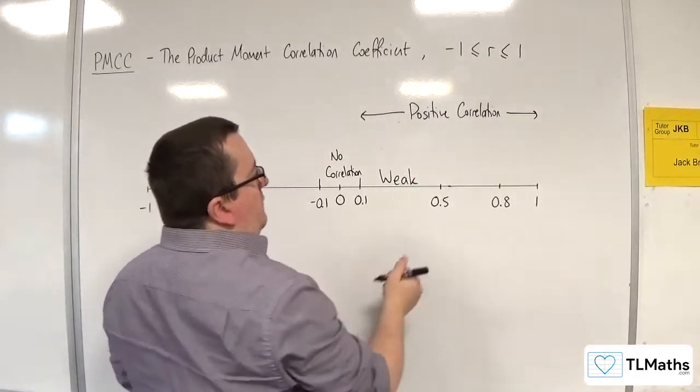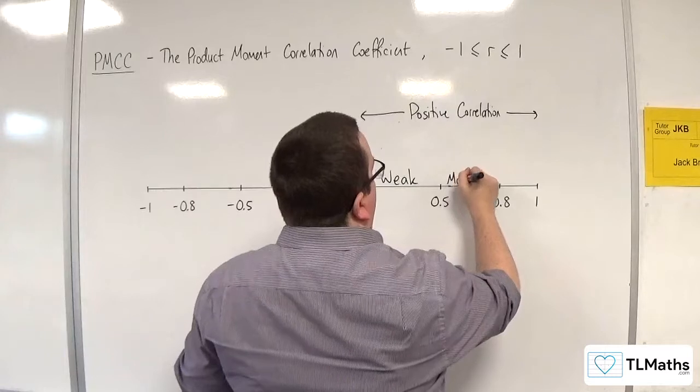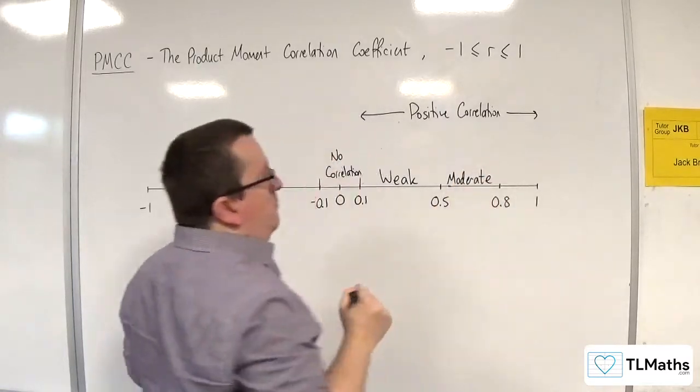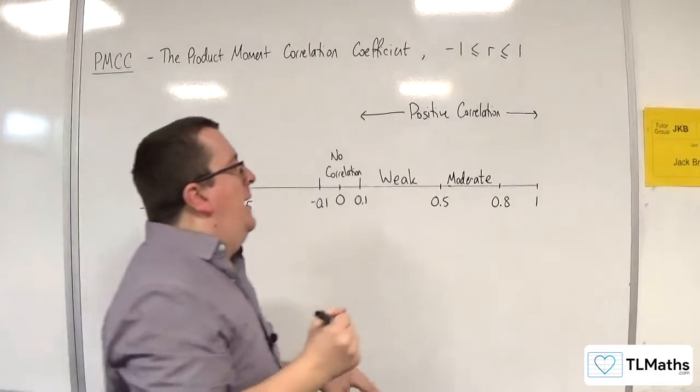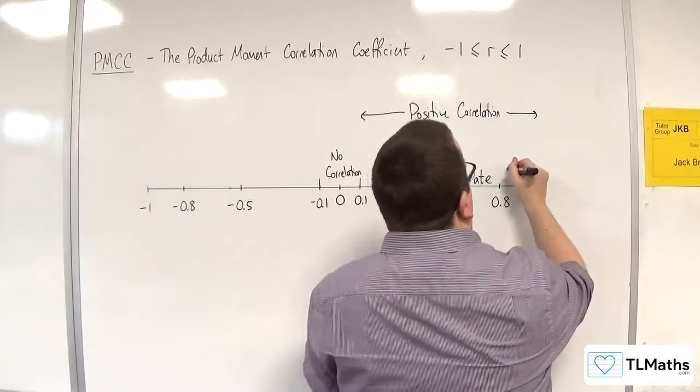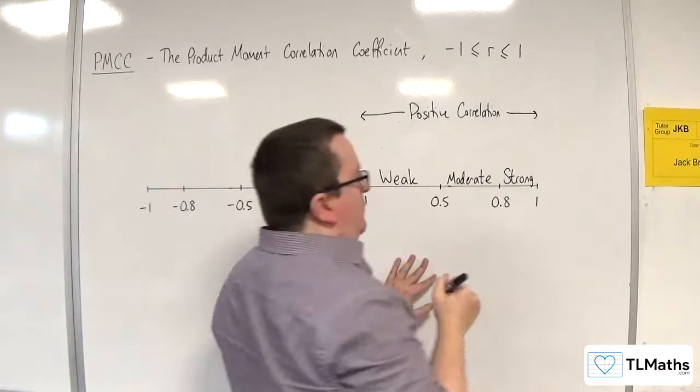If it's between 0.5 and 0.8, then moderately strong, so moderate positive correlation. And if it's between 0.8 and 1, then we refer to that as strong positive correlation.